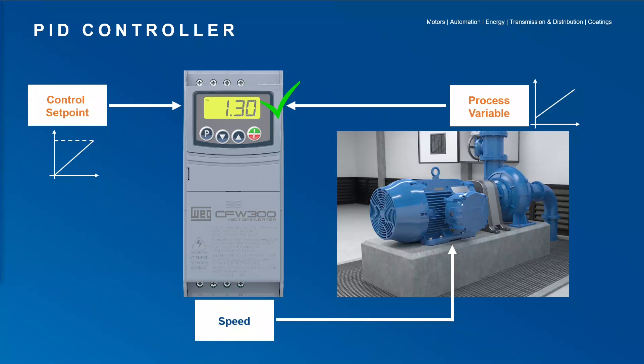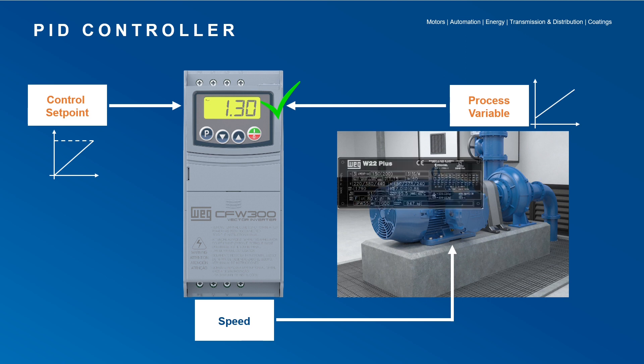Now, using a didactic suitcase, we will show the programming of the CFW300 to control the variable pressure at an outlet of a pumping system piping. Considering that the CFW300 drive is with the default configuration and the motor's nameplate data are entered in the drive, we will start to program.